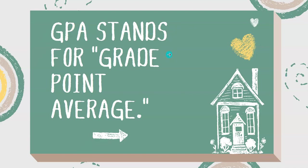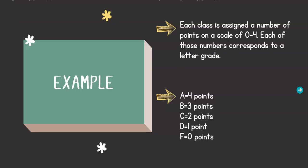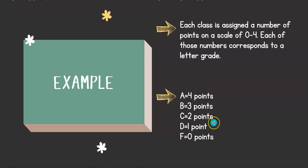First of all, GPA stands for grade point average. To put it simply, each of your classes is worth a certain number of points that you can earn. You could earn either the total amount or a portion of the points based on the grade you earned in that class. Each class is assigned a number of points on a scale of zero to four, and each of those numbers corresponds to a letter grade. An A is four points, a B is three points, a C is two points, a D is one point, and an F is zero points.